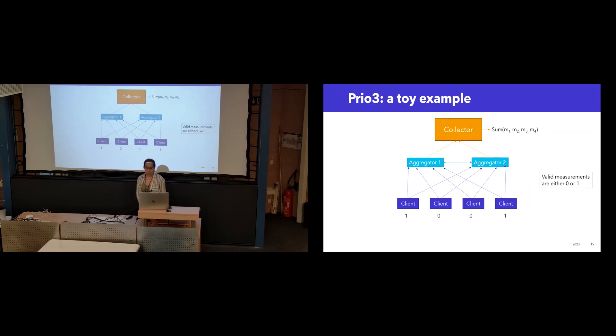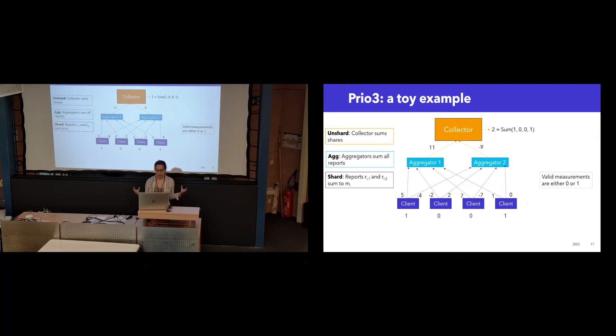So now I'm going to talk a little bit about how PRIO3 works. So PRIO3 is an optimized version of the PRIO system. Let's give a little toy example. Imagine that we are looking at one-bit measurements for each client and the collector wants to learn the sum of these measurements.